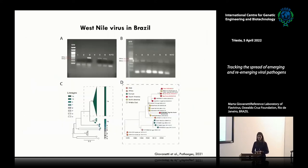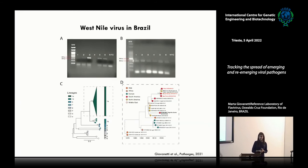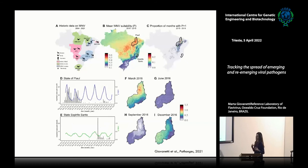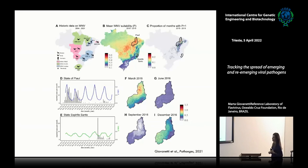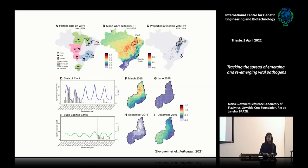We also extended those activities to West Nile virus. We detected the first cases of West Nile virus in Brazil using nanopore sequencing. Again, we combined information with epidemiological as well as ambiental data to identify and predict possible areas that need to be prioritized for monitoring and surveillance in general.